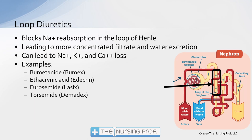Loop diuretics work in the loop of Henle, blocking sodium reabsorption there. Keeping sodium in the urine draws more fluid into the urine, so we dump more fluid. This leads to more concentrated filtrate, drawing water in from the vascular system. Loop diuretics can cause sodium, potassium, and calcium loss, so we have to carefully watch those electrolytes in patients on loop diuretics. Furosemide is one of the most commonly used loop diuretics.